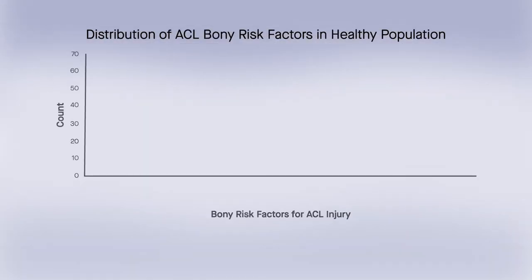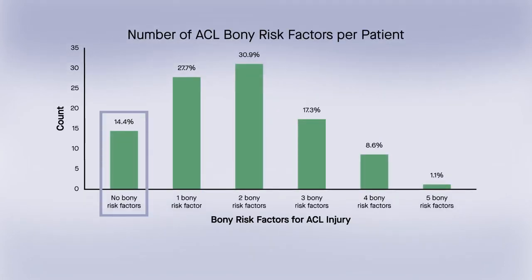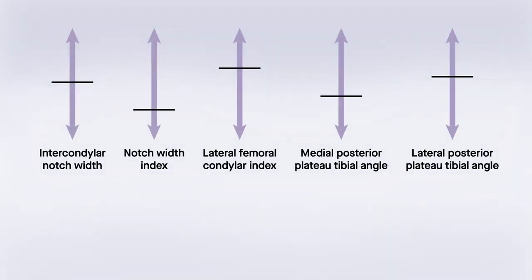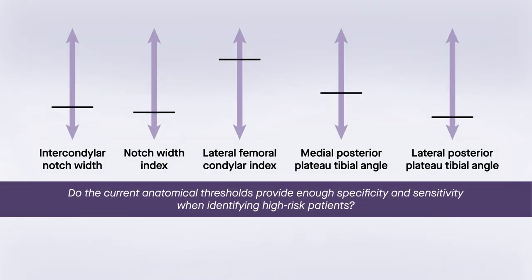According to published thresholds for these factors, 15 to 62% of people in this healthy population were at risk of sustaining an ACL injury, and fewer than 15% had no bony risk factor. These rates raised the question of the specificity and sensitivity of current anatomical thresholds in identifying high-risk patients.